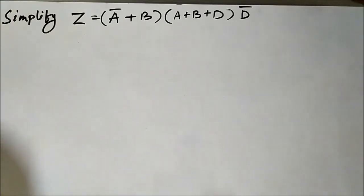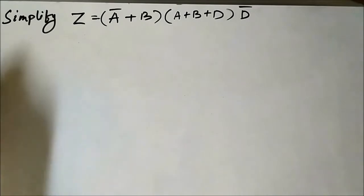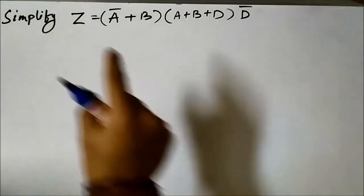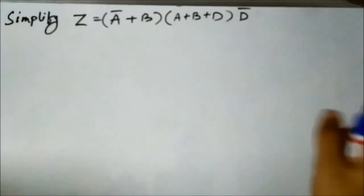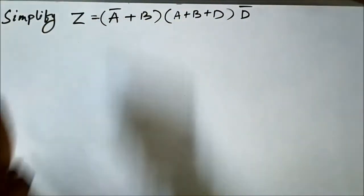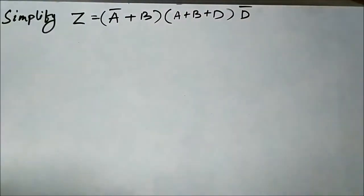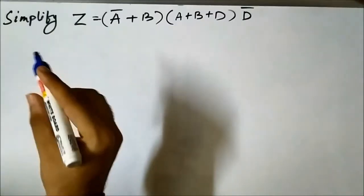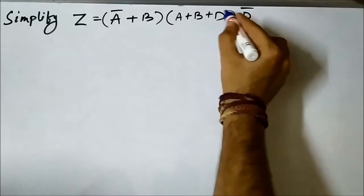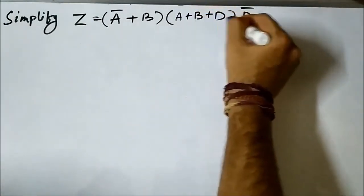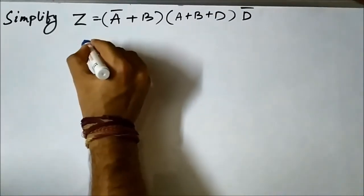Now we have another question on simplification of a Boolean expression. The expression is z = (ā + b)·(a + b + d)·d̄. We need to simplify it. Let us open up the bracket and multiply d̄ with each of the variables inside.